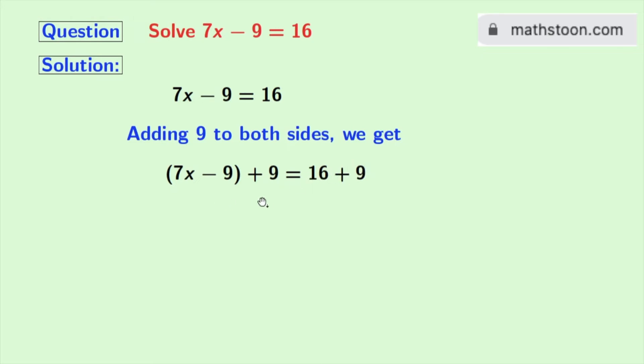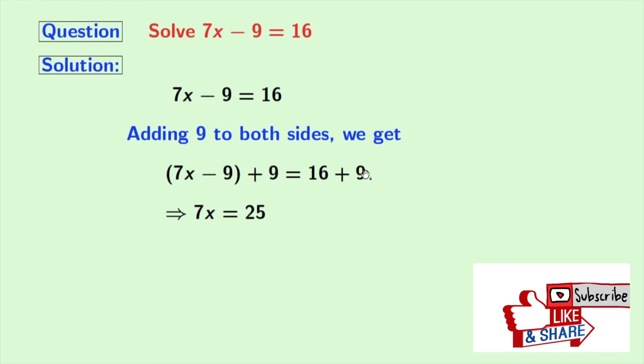On the left hand side there is minus 9 and plus 9 which is zero. So we have 7x on the left hand side and on the right hand side adding these two we get 25.